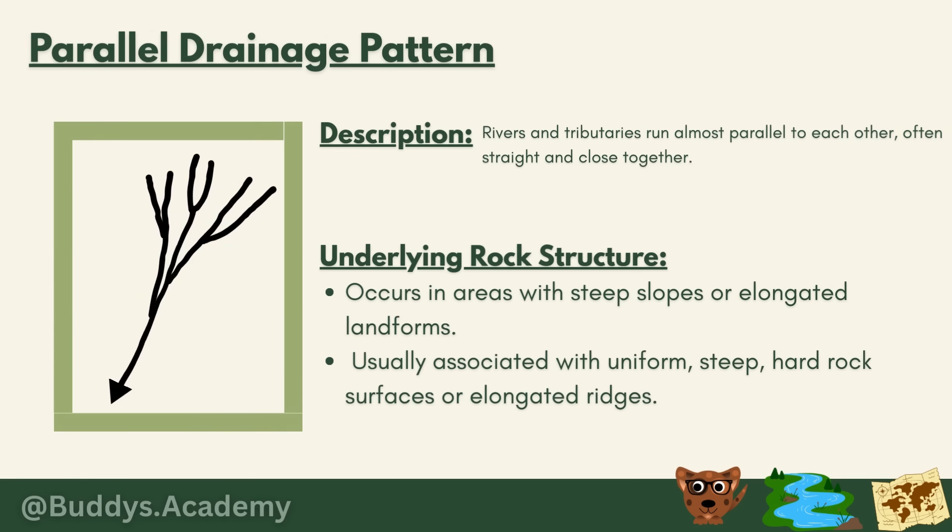The seventh and final drainage pattern is the parallel drainage pattern. Rivers and tributaries run almost parallel to each other — often straight and very close together. This occurs in areas with steep slopes or elongated landforms, and is usually associated with uniform, steep, hard rock surfaces or elongated ridges. To identify all seven drainage patterns, just look for what makes each design unique, and like that you'll get the hang of it.